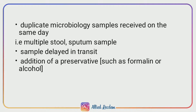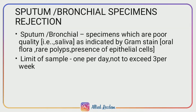Duplicate microbiology samples received on the same day — that is, multiple stool or sputum samples. Next, samples delayed in transit, meaning transport samples delayed in transportation. Next point: addition of a preservative such as formalin or alcohol to sputum or bronchial specimens.